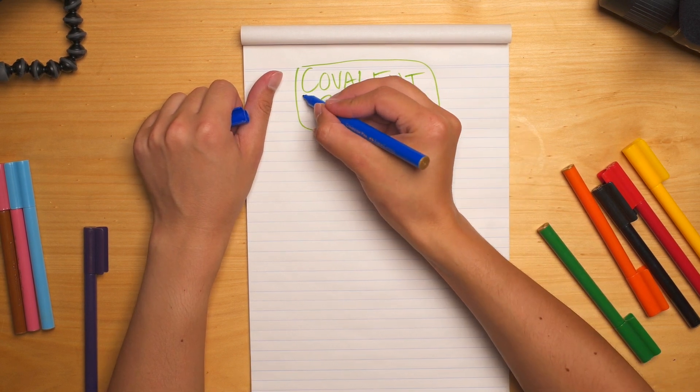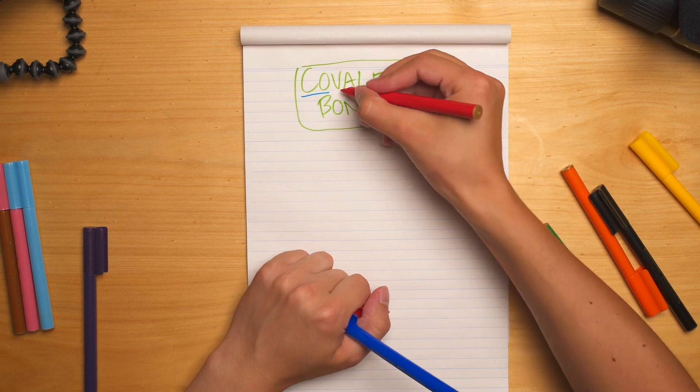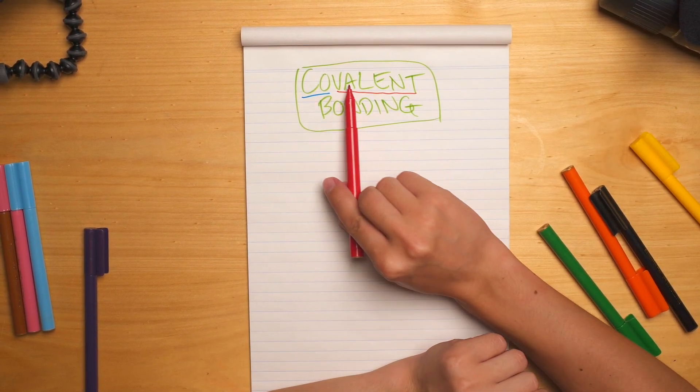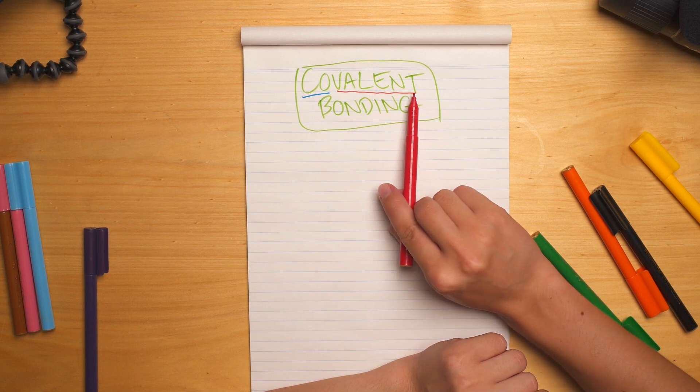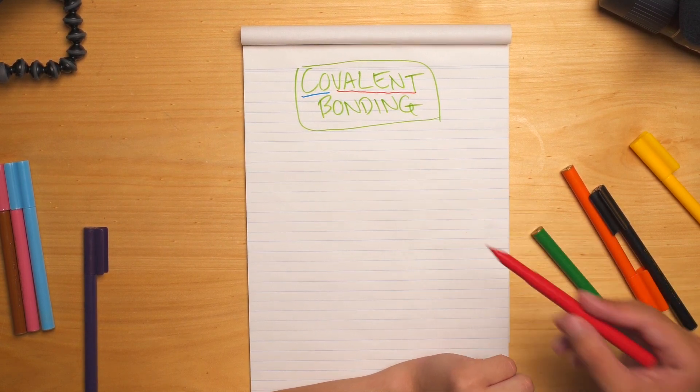So I'm going to break it up into two bits here. It's got co and it's also made of the word valent. So that means together and valent referring to valence electrons. So sharing their valence electrons, that's what makes the bond.